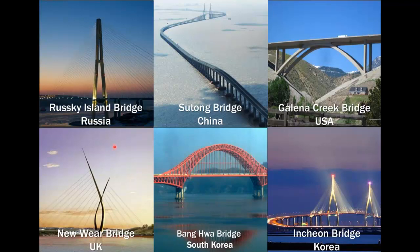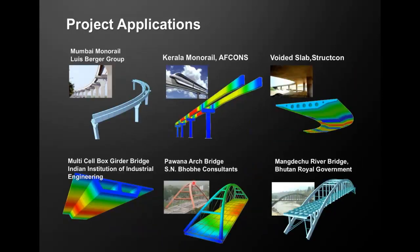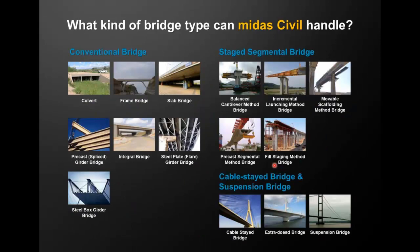These are just a few signature projects. It has been used in India and around the globe with real models from clients like Lenti, AECOM, and Louis Berger — box girder bridges, balanced cantilever bridges, arch bridges, voided slabs, and twin cell box bridges. When people ask what kind of bridge types Midas Civil can handle, I would say three segments: conventional bridges, staged segmental bridges, and long-span bridges.